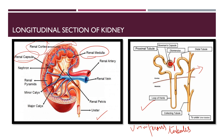What are renal pyramids? These are cone-shaped tissues which help in blood filtration and water concentration regulation within the kidneys.